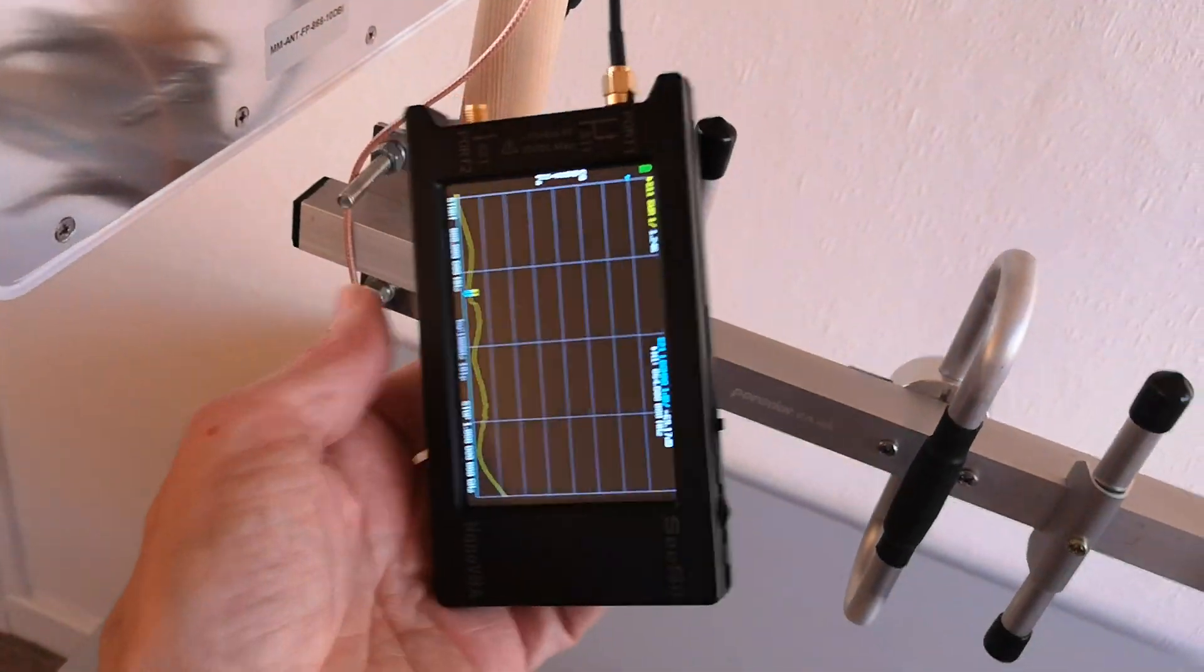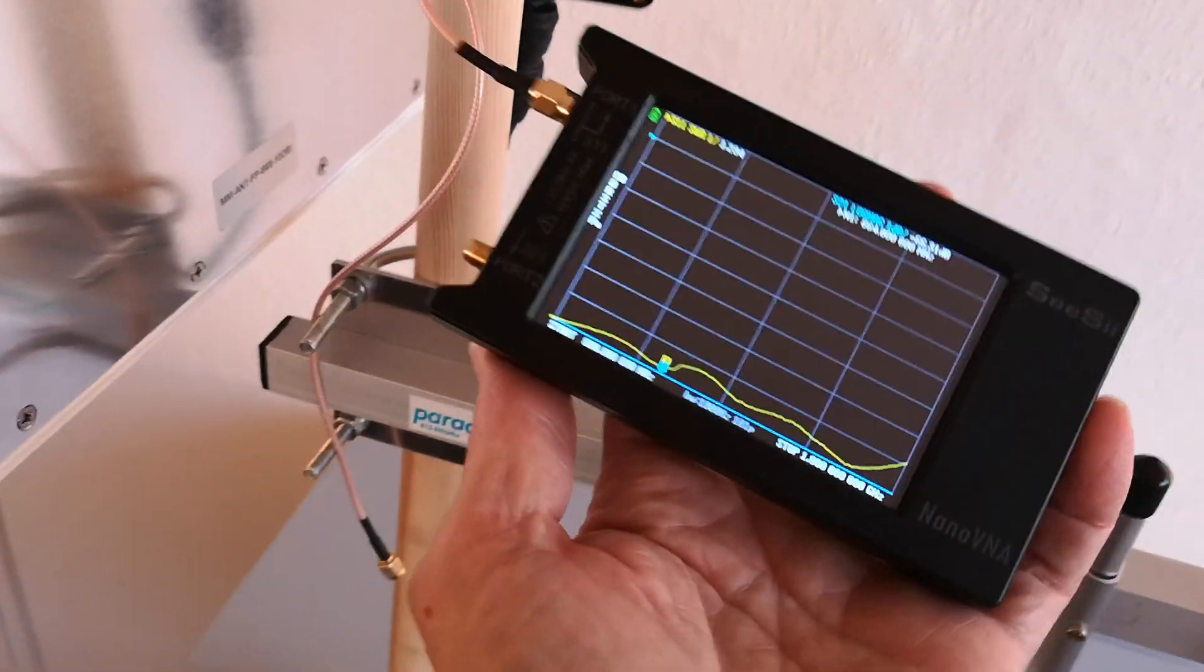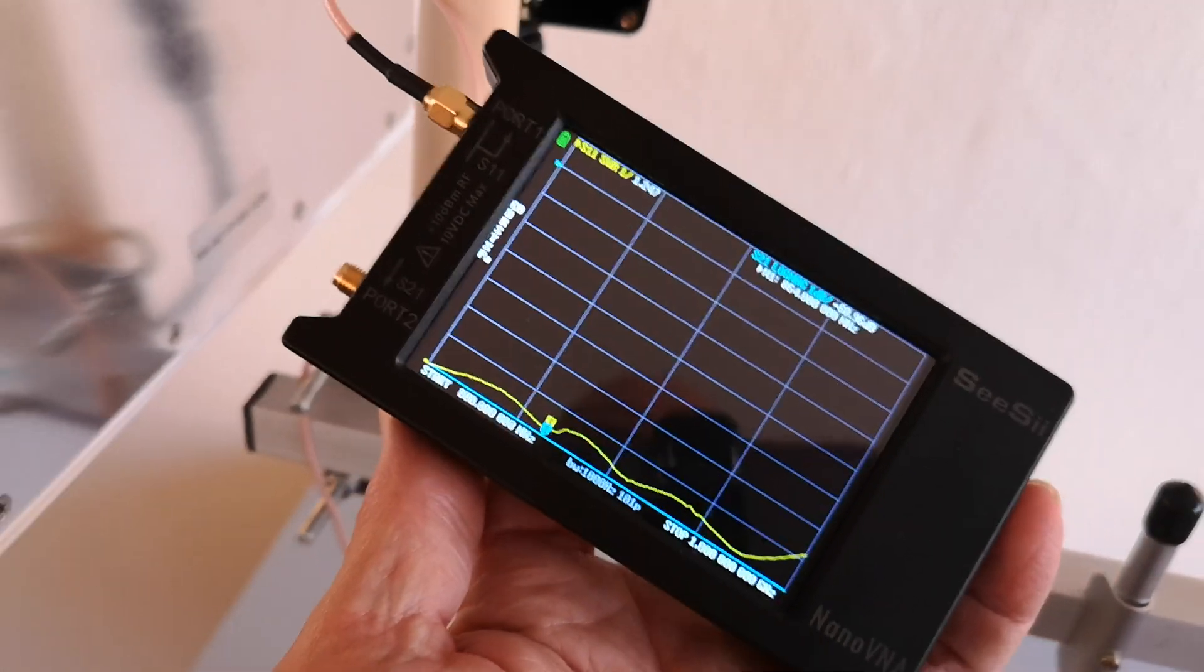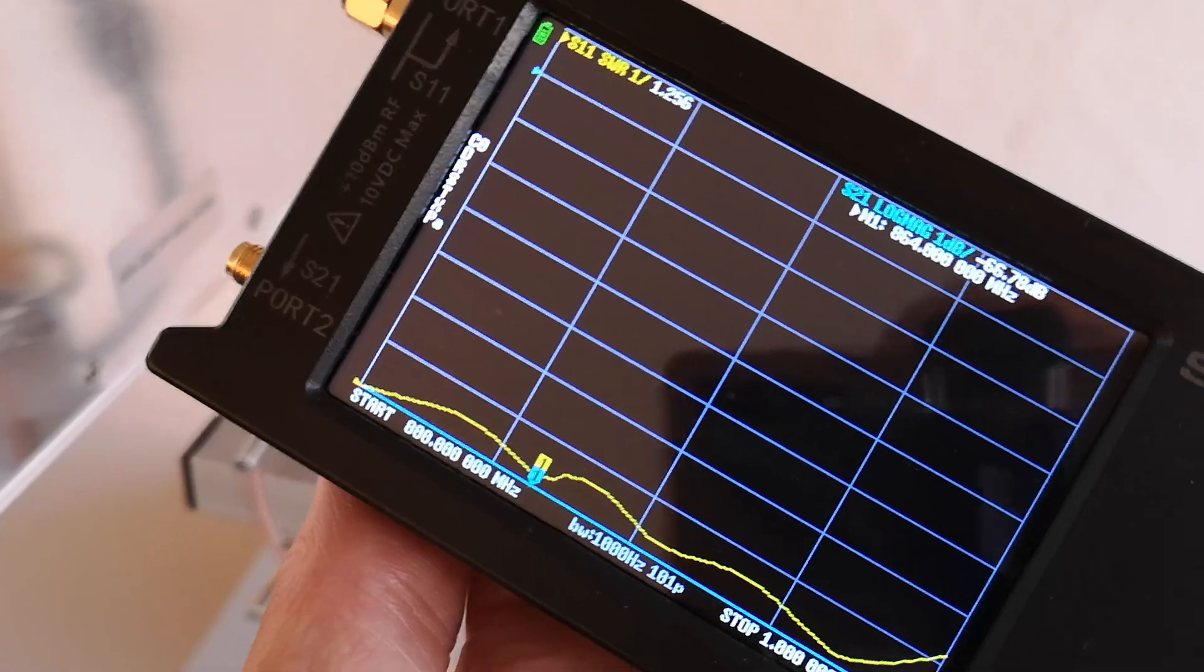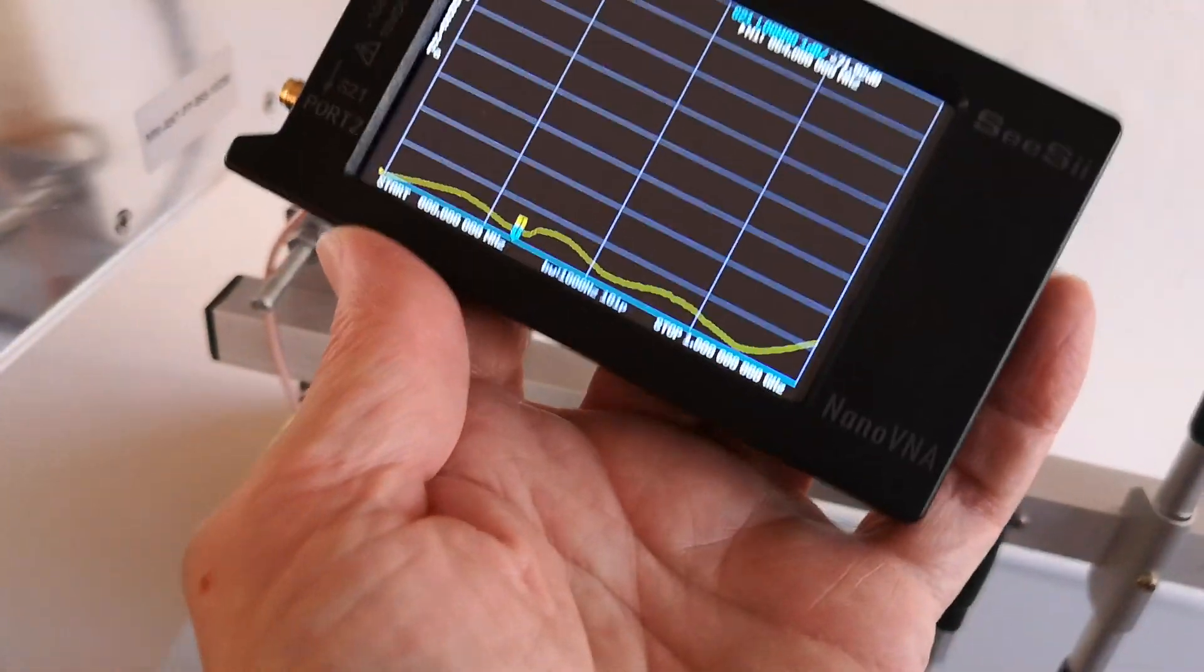So that will affect the SWR, making it look worse than it really is. So it's a very unfair test. Probably the SWR is better than that in free space and maybe when the weather gets better I'll take all this gear outside and try it outside. So at 1.2 something, that's amazing.